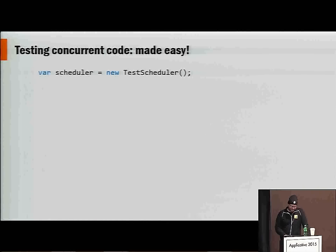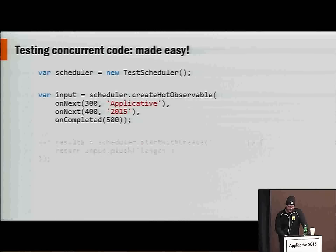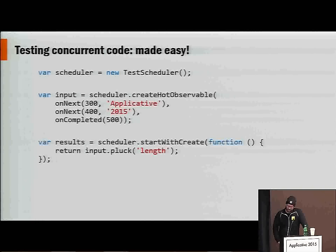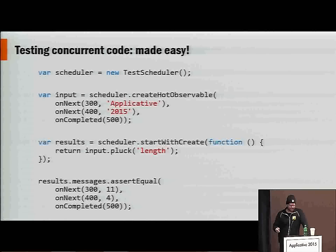Schedulers introduce the concurrency model. Any operation can be parameterized — I can go from immediate to timeout to requestAnimationFrame to whatever I want. This also provides testing benefits because instead of being tied to a concrete thing like setTimeout, I can swap it out for a complete virtual time. We're going even further where web workers can be done over schedulers — taking the entire expression tree, sending it over to a different machine, calculating the result and sending it back. So cancellation goes all the way into the deep core of Rx. All of our code in Rx is written so we can create a test scheduler, create a sequence at 300, 400, and 500 ticks — 300 yields 'applicative', 400 yields 2015, 500 calls onCompleted. We can assert length of 11 at 300 ticks and length of 4 at 400 ticks every single time, without any async testing or waiting for timers.